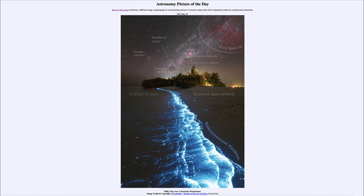We also see the Southern Cross. In the northern sky we have the large Northern Cross, but south of the equator another cross appears — a little smaller — and we can see it just above the Coal Sack Nebula. Off to the left we see the star known as Omega Centauri, part of the constellation of Centaurus, which also contains the bright star Alpha Centauri — the system of stars nearest to our own Sun.